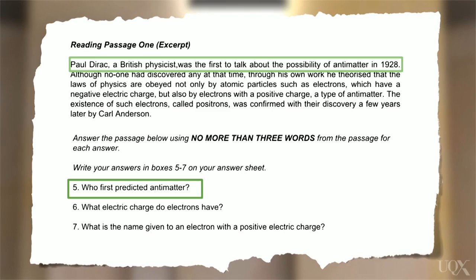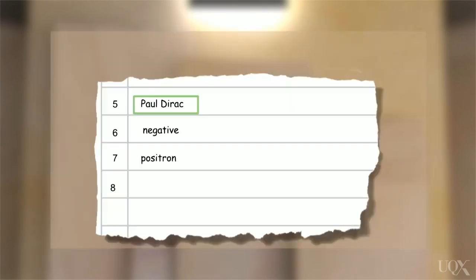And we can see the name of a person, Paul Dirac. So the answer is Paul Dirac. That's two words, which is under the word limit. And I've copied the name accurately from the question paper. So that answer is correct.